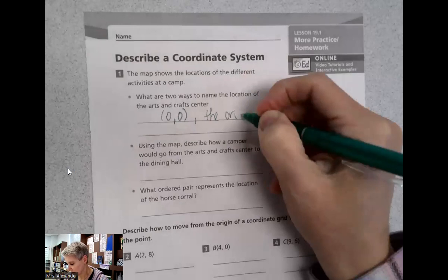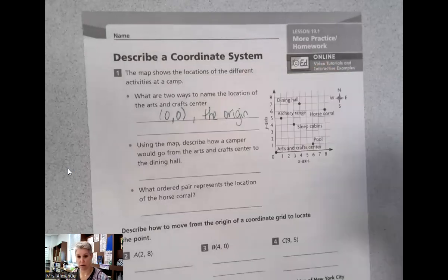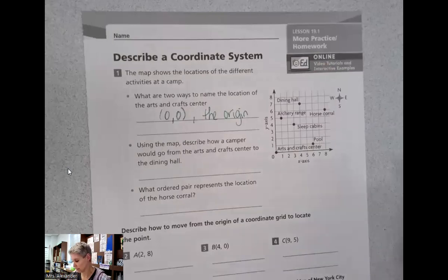It's at (0,0), or we could call it the origin. So remember that means where we're starting, where it originated, where it began. So a couple of ways that we can talk about this point on our map.